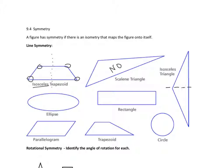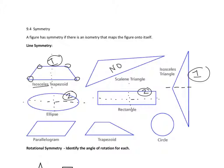An isosceles triangle has one line of symmetry. An ellipse has two lines of symmetry. A rectangle also has two lines of symmetry — you could not do it diagonally, because that corner wouldn't fold right.